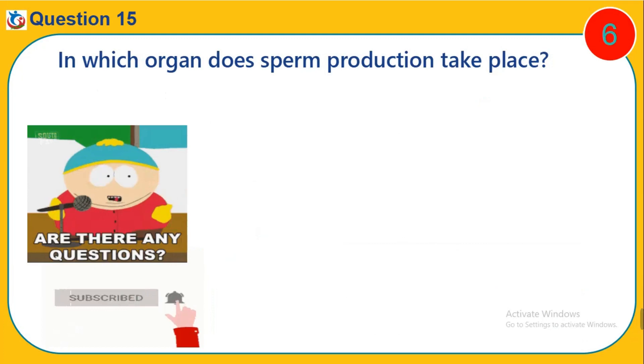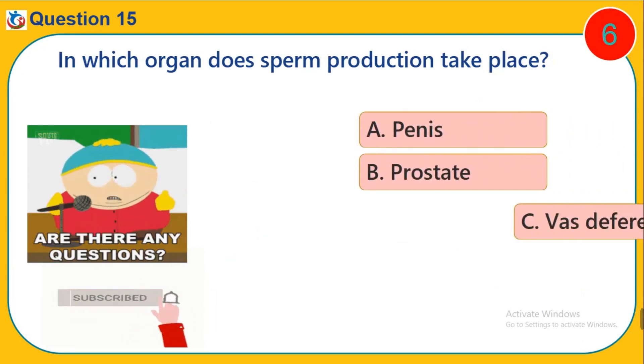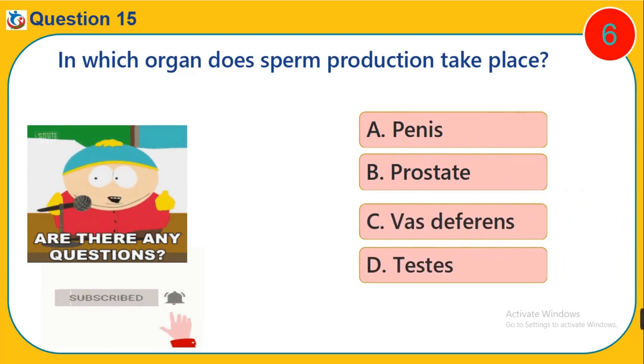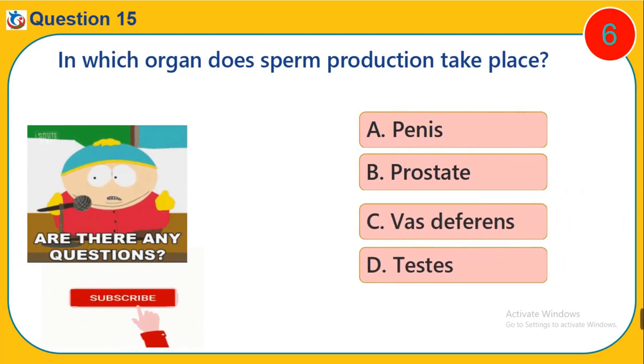Question 15. In which organ does sperm production take place? A. Penile erection. B. Prostate. C. Vas deferens. D. Testes.